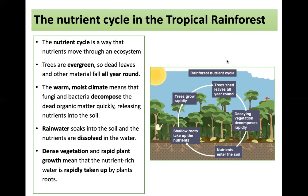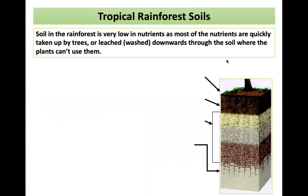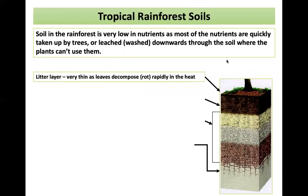The nutrient cycle in the rainforest is similar. It shows how nutrients move through the ecosystem. Trees are evergreen, so dead leaves and other material fall all year round. The warm, moist climate means that fungi and bacteria decompose that dead organic matter really quickly, releasing nutrients into the soil. Rainwater soaks into the soil and the nutrients are dissolved in the water. Dense vegetation and rapid plant growth mean that the nutrient-rich water is rapidly taken up by plant roots.